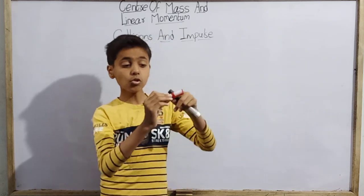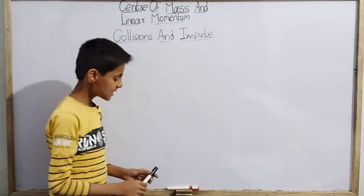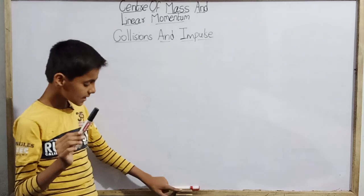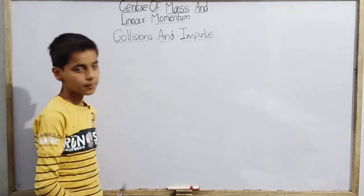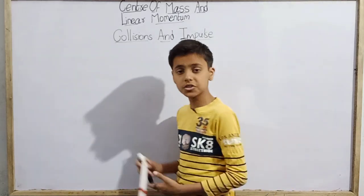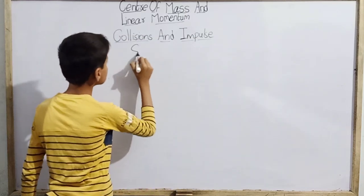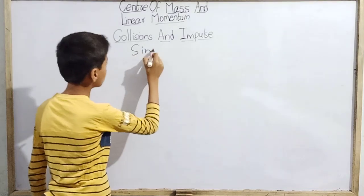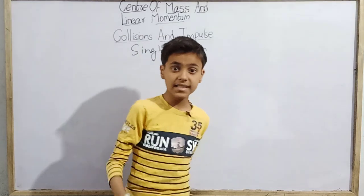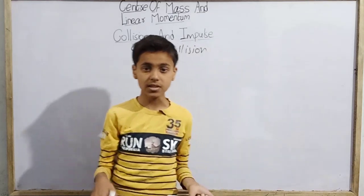So there is some collision between particles. Suppose I take this marker as the projectile and this duster as the target, and I strike the marker on the duster — these two particles collide. There are a number of collisions around us. First we will know about a single collision, and then a series of collisions, which we may cover in the next video.